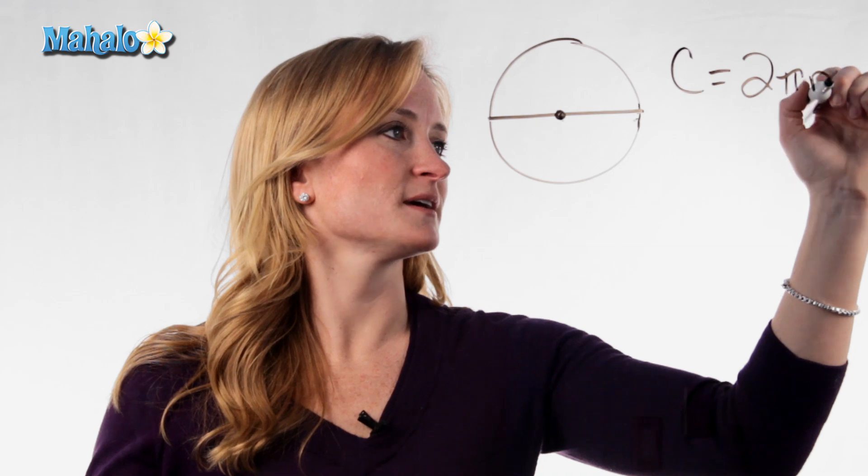The formula for circumference most often seen is C equals 2 times pi times the radius.